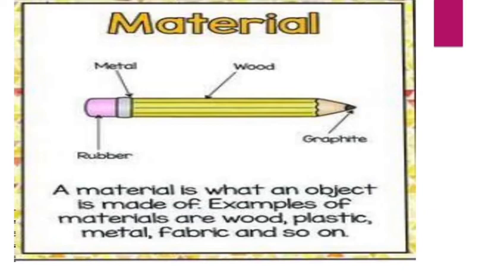For example, a pencil is made up of various materials like rubber, metal, wood, and graphite. So one object can be made out of various types of materials. A material is what an object is made up of. Examples of materials are wood, plastic, metals, fabrics, and so on.